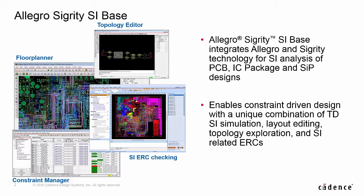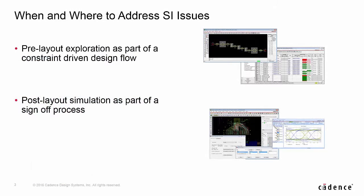Allegro Sigrity SI can be an integral part of any constraint-driven design flow by enabling SI analysis at both the design and topology level, as well as providing editing and screening capabilities. We all know that a constraint-driven flow saves time and prevents issues from propagating down to SI sign-off. Historically that flow included pre-layout analysis, which can start at any time and help define your solution space and corresponding electrical constraints. But what about post-layout?